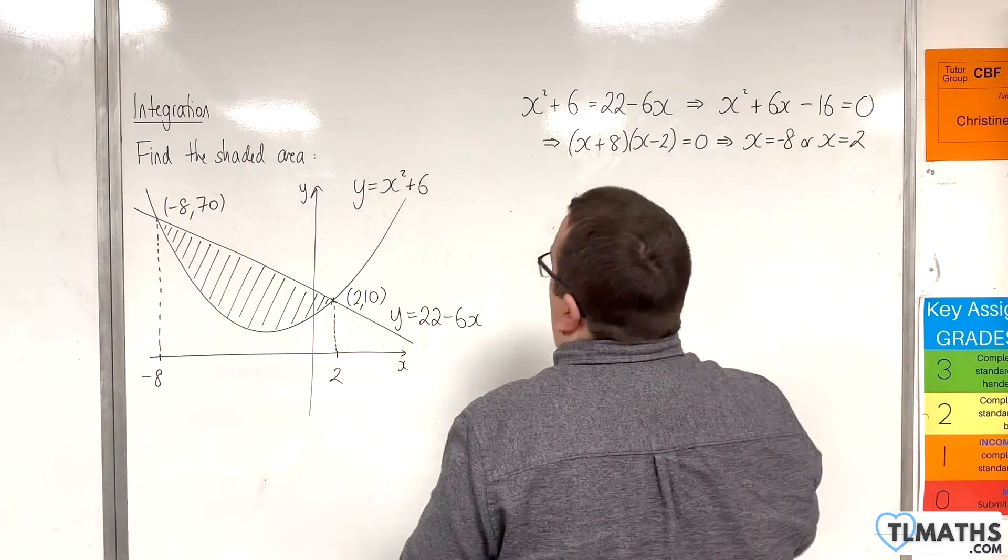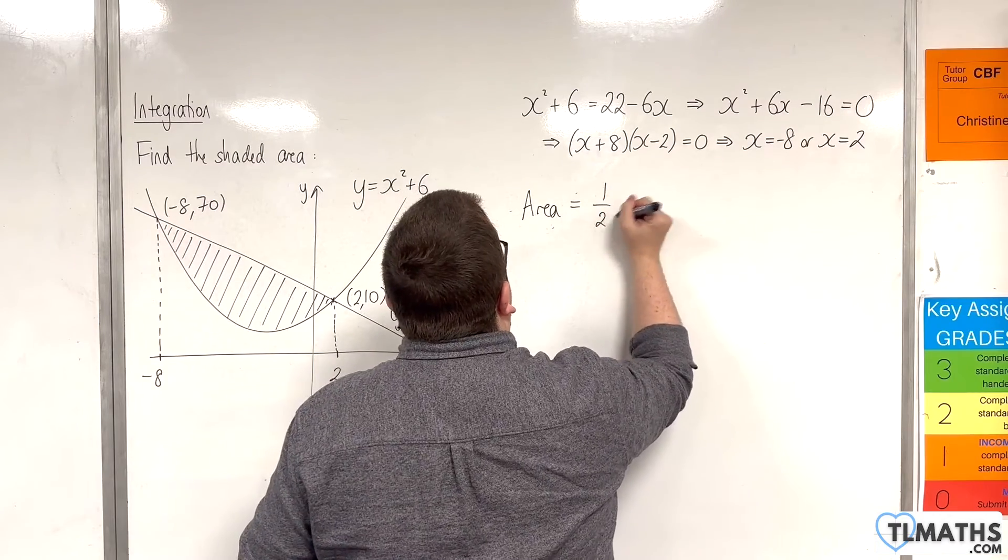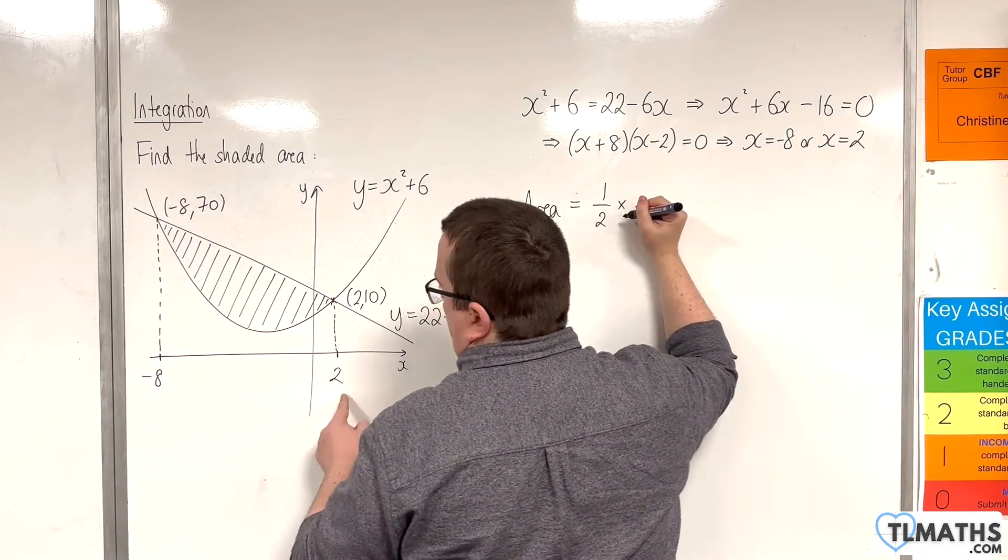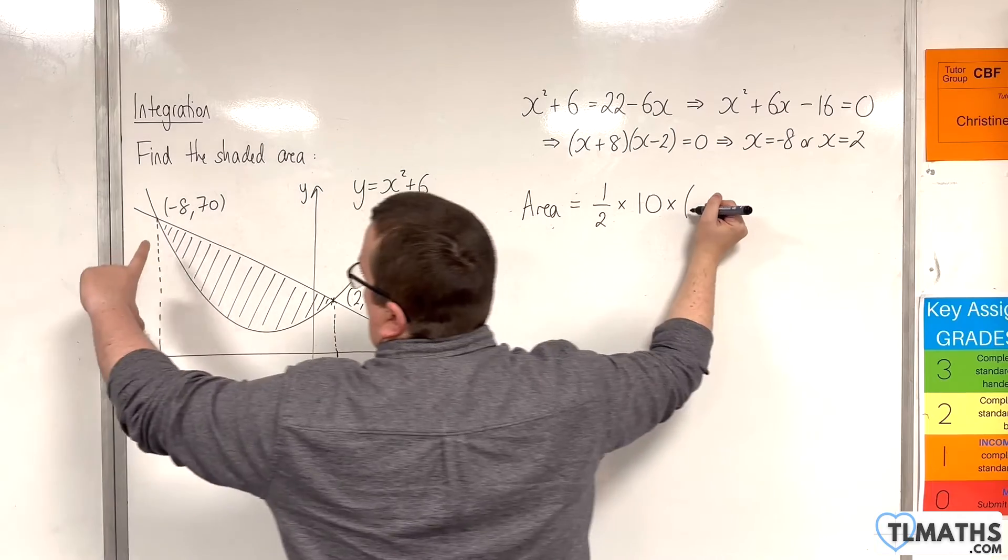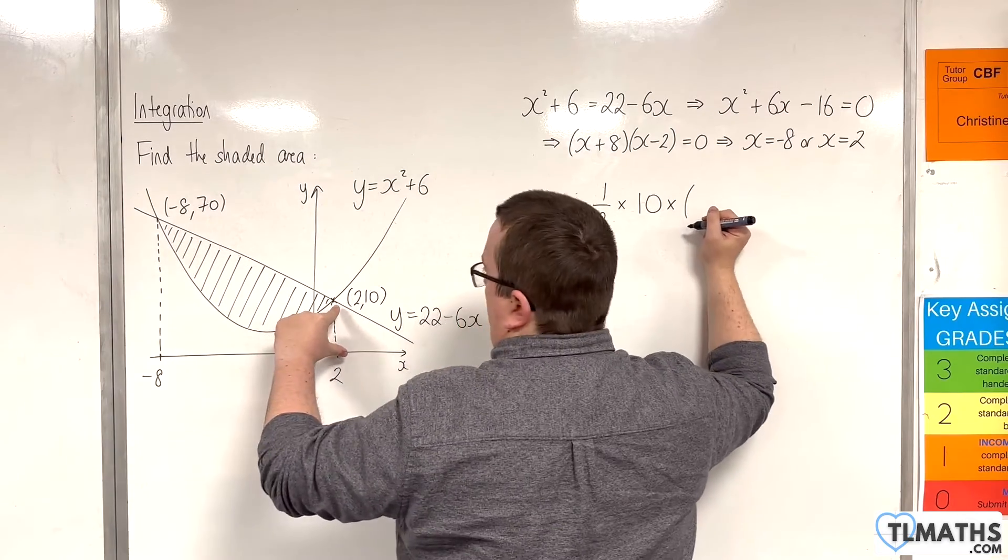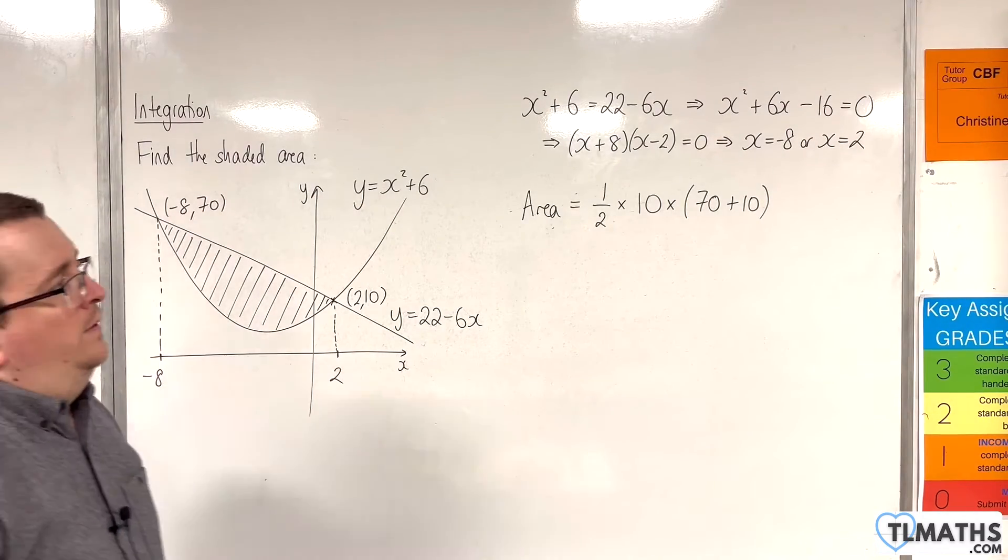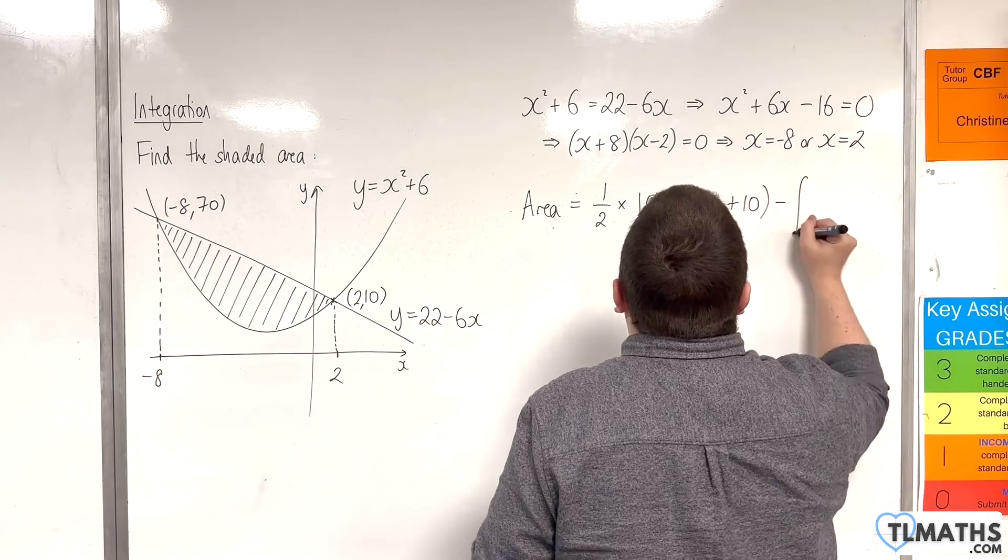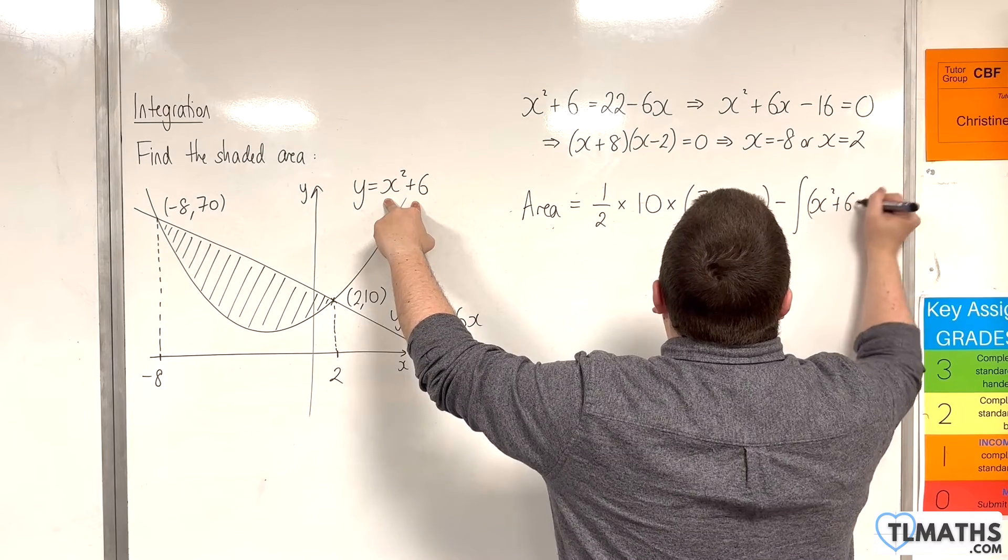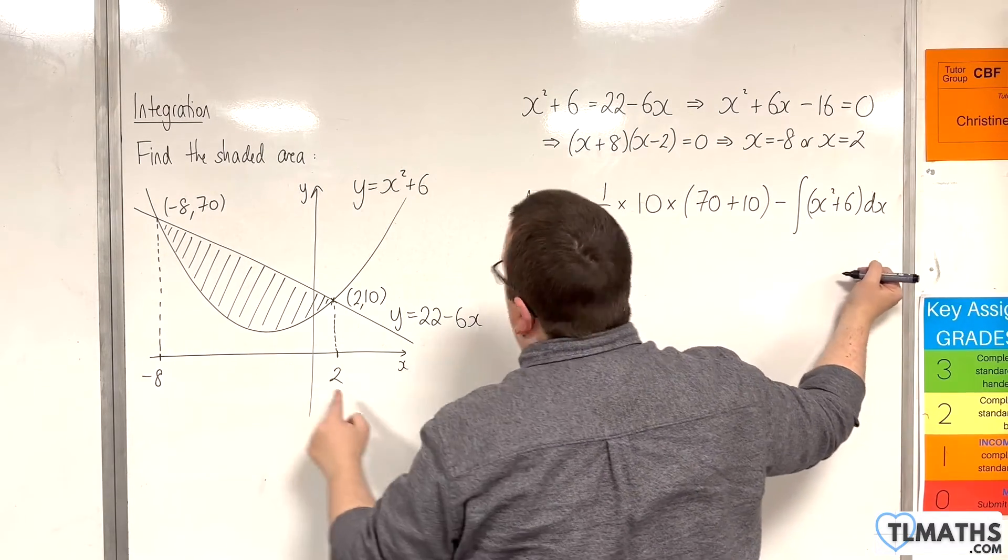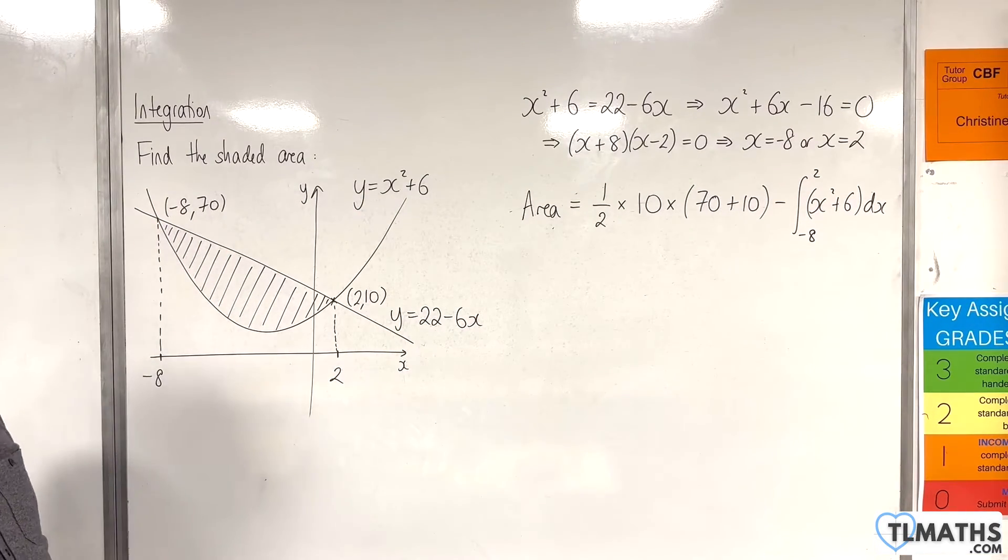Okay, so the area is the area of the trapezium, which is going to be 1 half times by the width, which is minus 8 to 2, so 10, times by 70 plus 10. Okay, so that's the area of the trapezium. Take away the area underneath the curve, so the integral of x squared plus 6 dx, evaluated between minus 8 and 2. Okay, so that should be my shaded area.